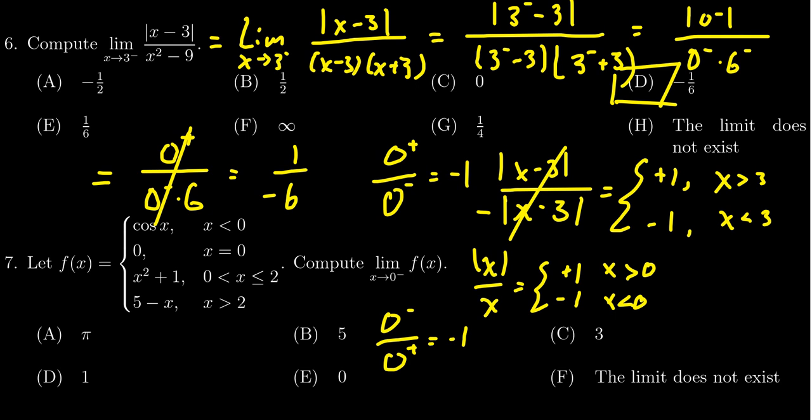If you don't like the 0 plus 0 minus business, then the idea is just to remember this. If you have the absolute value of a quantity divided by that exact same quantity, then it'll always be plus or minus 1, depending on whether that quantity was originally positive or negative.